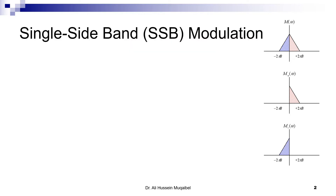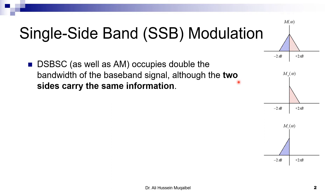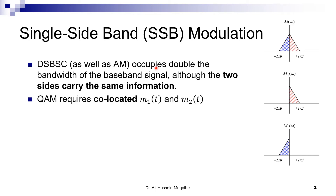In single sideband modulation, you can see the time domain and frequency domain representation of the message spectrum. The red and blue parts are similar — I'm just showing the colors for illustration. On one side we have one single side of the spectrum, and on the other side we have the other. In double sideband suppressed carrier as well as full AM, the modulated signal occupies double the bandwidth of the baseband signal, although the two sides carry the same information. So is there a way to get rid of this and get only one single sideband to improve bandwidth efficiency?